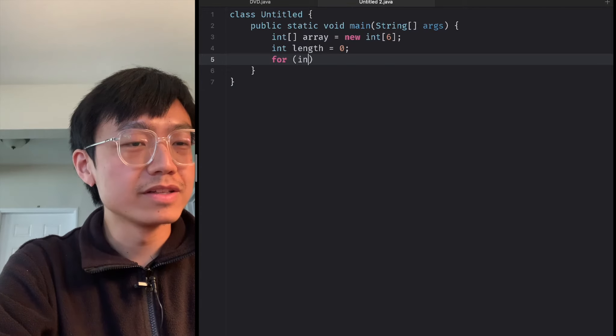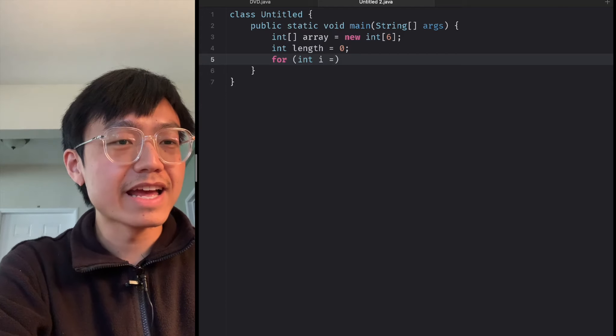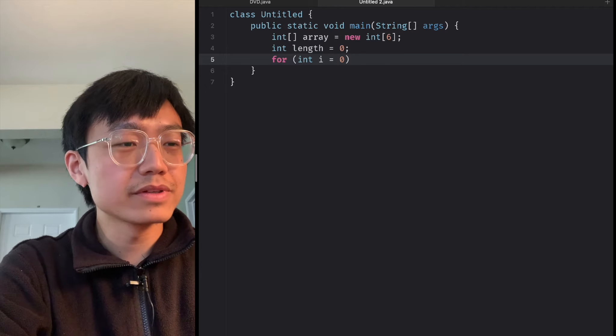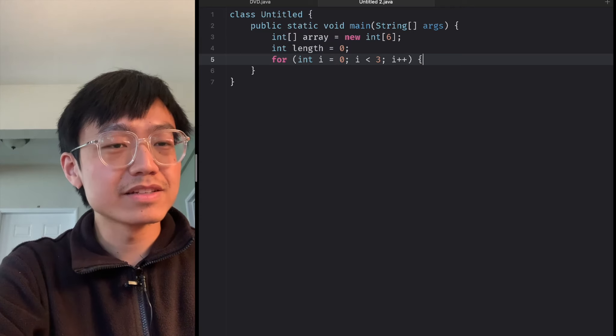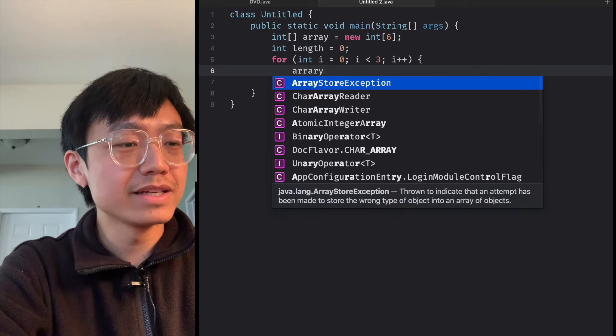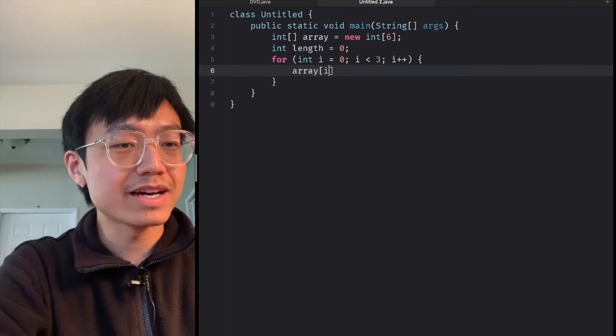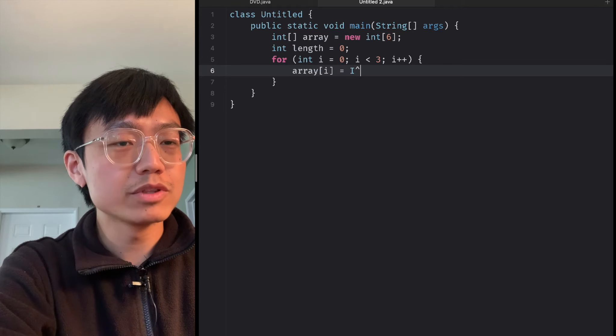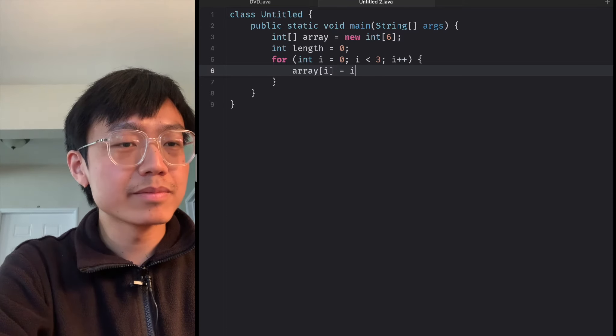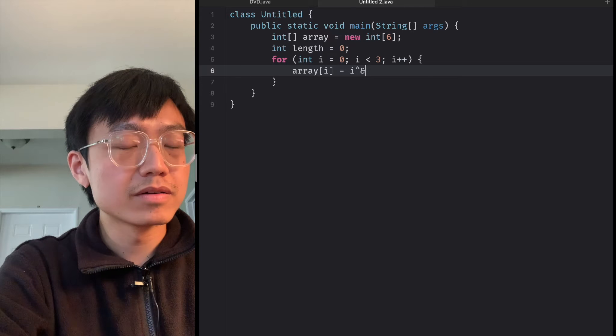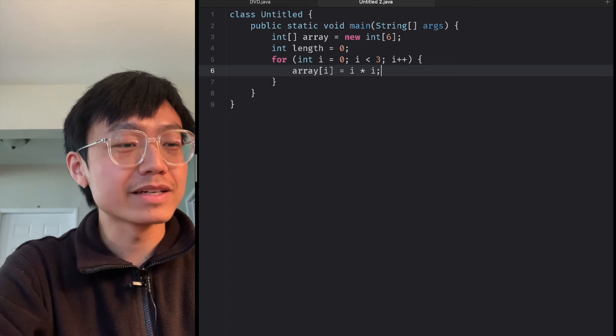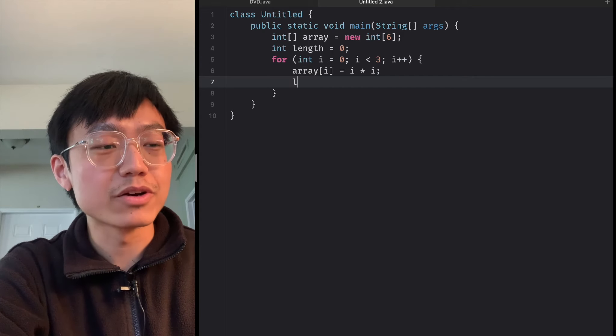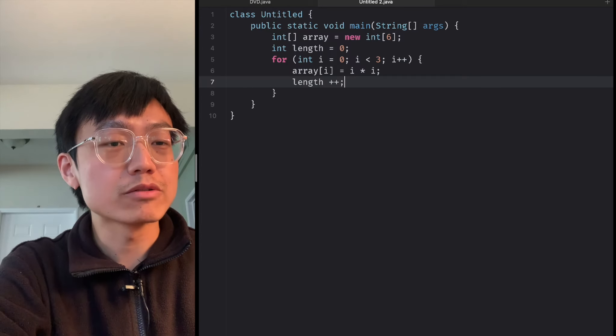To declare an integer i starting from zero, and i less than 3, i plus plus. And inside the for loop is array[i] equals i multiplied by i, so it's i squared. Each time we add an element, its length goes one by one, length plus one.